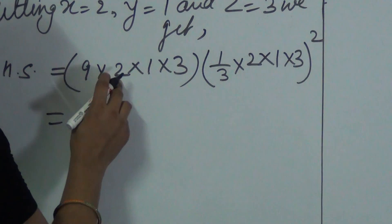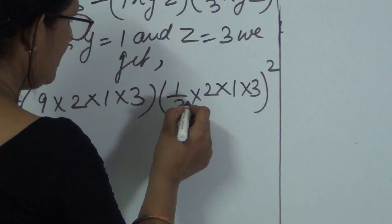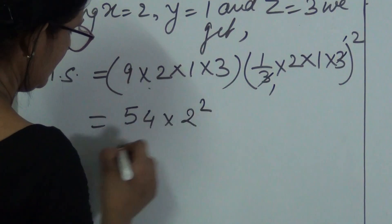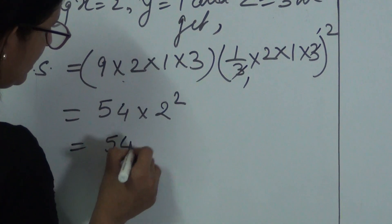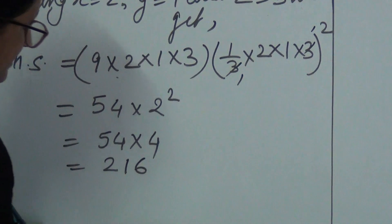9 into 2 is 18, into 3 is 54. And here in this bracket we see 3 can be cancelled. We have 2 square. That is 54 into 4 which gives us 216.